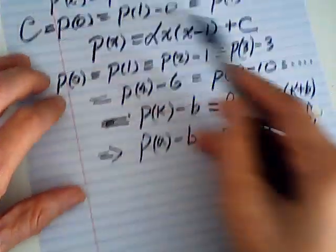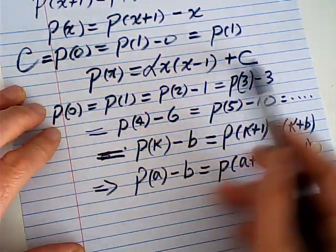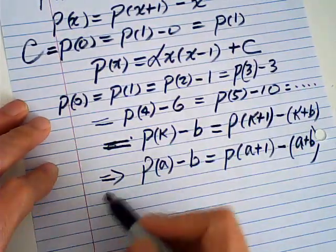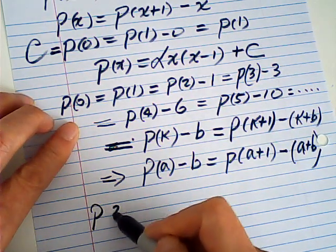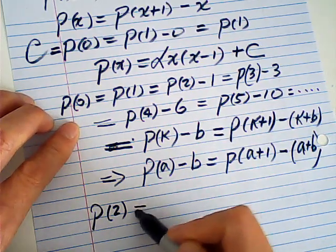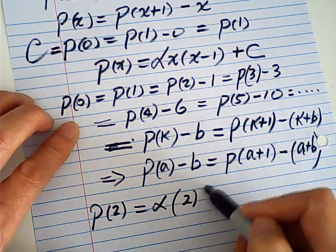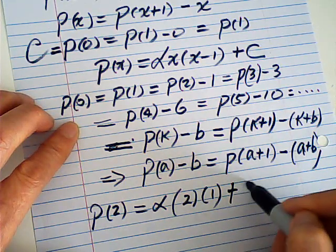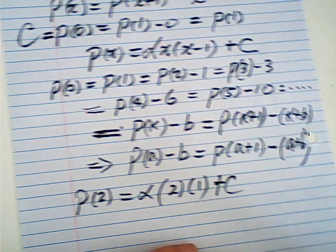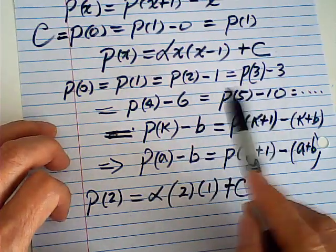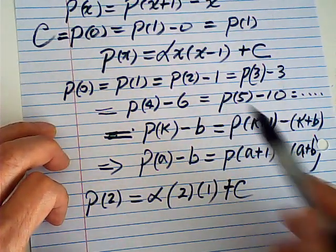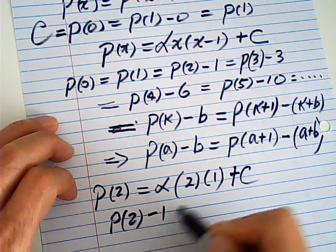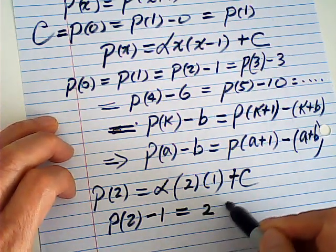So this is my suggestion of the polynomial. Then P(2) is equal to α times 2 times 1 plus C. P(2) is this. So P(2) minus 1 is equal to 2α plus C.